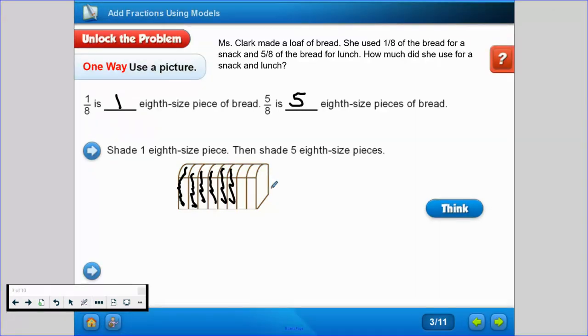Now let's count how many pieces of bread we shaded: 1, 2, 3, 4, 5, 6. See, we shaded 1 piece for snack, 5 pieces for lunch. The pieces we shaded represent the pieces that Ms. Clark used.